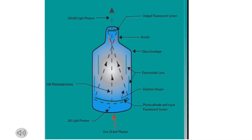First we're going to cover the fluoroscope. The first part is this input phosphor. It's made of cesium iodide. It receives the x-rays that come from the patient and produces light. So the x-rays are coming into the fluoroscope here and they hit this input phosphor and it's glowing, giving off light.